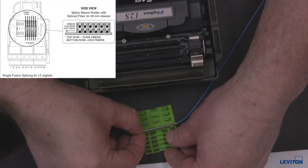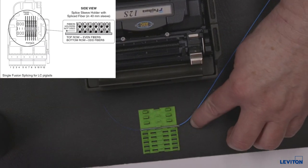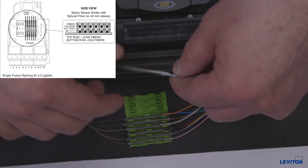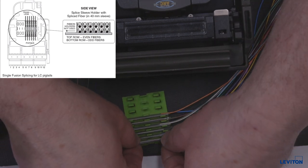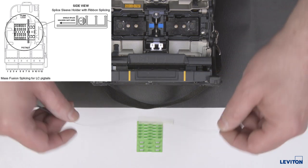After each splice, load the fibers into the splice sleeve holder in the following order for single fiber terminations. Make sure the internal strengthening rod is in the down position when you install it into the splice sleeve holder.